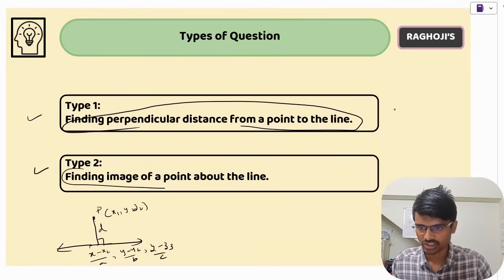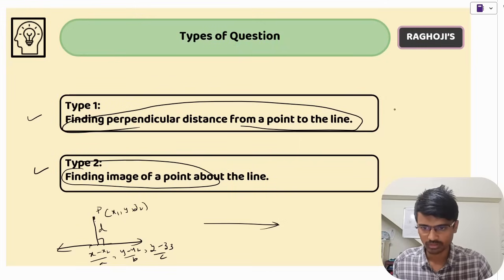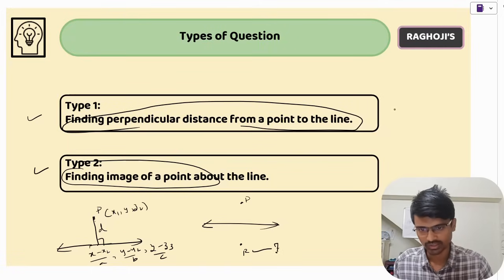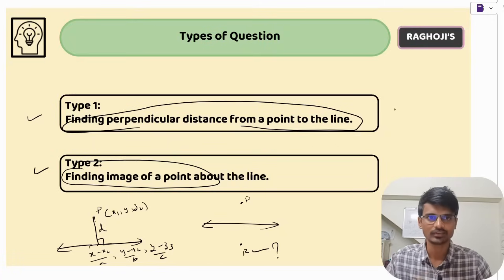The second type is finding the image of a point about a line. You have a line and a point P, and the image of this point about the line will be somewhere at a point R. We need to find the coordinates of R. The concept is almost similar for both types, so let us now look at the questions.